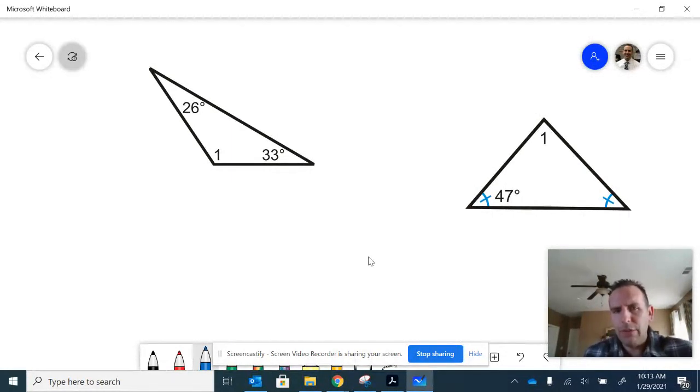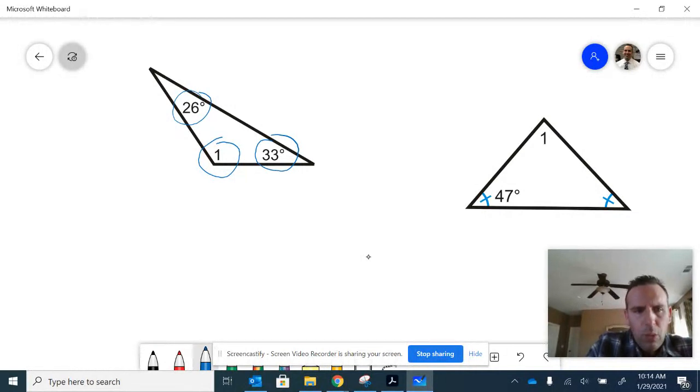Our first example at the left, we have a triangle with measures 26, 33, and then one unknown measure. We could conclude that the measure of these three angles must be 180 degrees. So we know 26 degrees plus 33 degrees plus whatever the measure of angle 1 is needs to add up to 180 degrees.